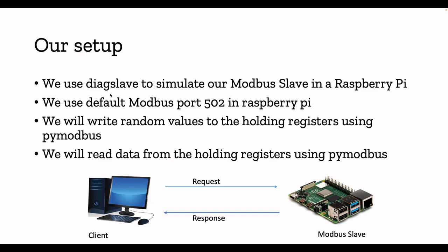We will use DiaxSlave - it's free software which you can run on your Raspberry Pi or Windows machine to simulate a Modbus slave. If you have multiple Raspberry Pis, you can run the same software on different ones to simulate a real Modbus environment with many slaves. We'll use port 502, which is the default Modbus port, and the slave will be exposed on that port so the client can connect to read and write data from the holding registers.